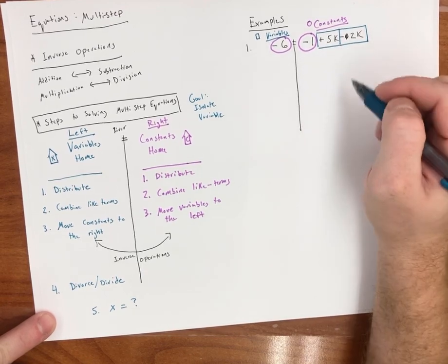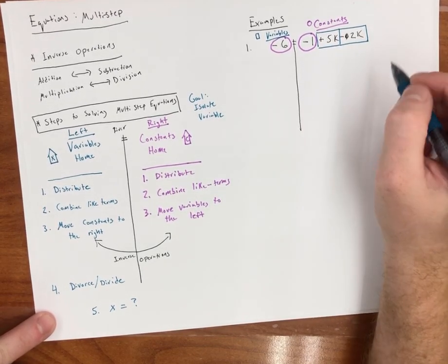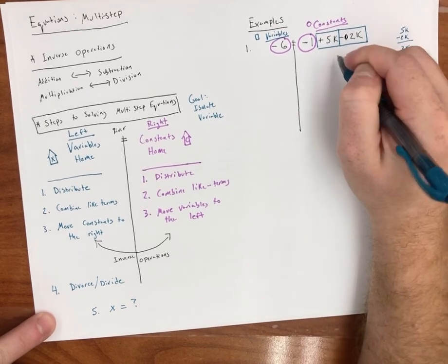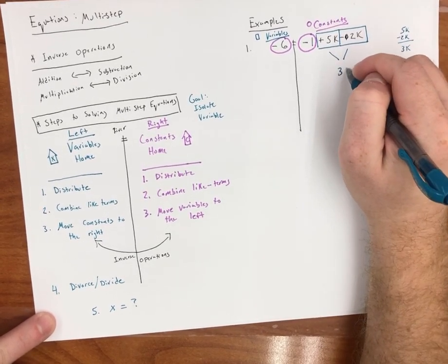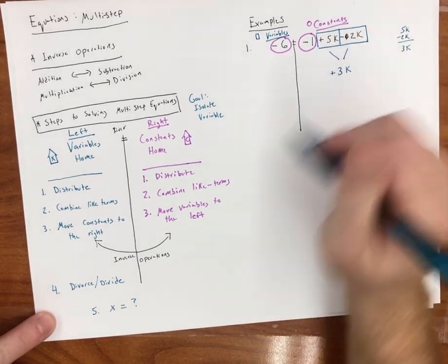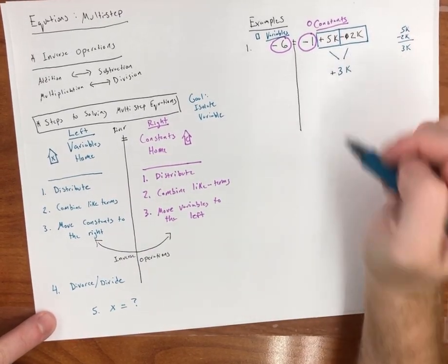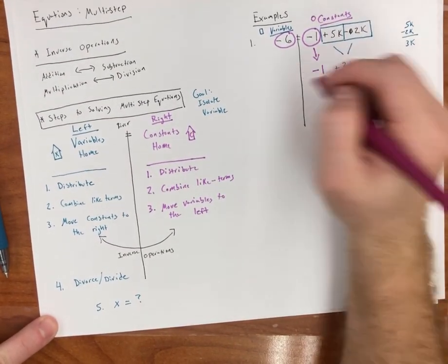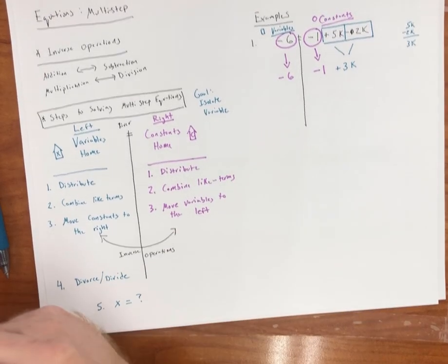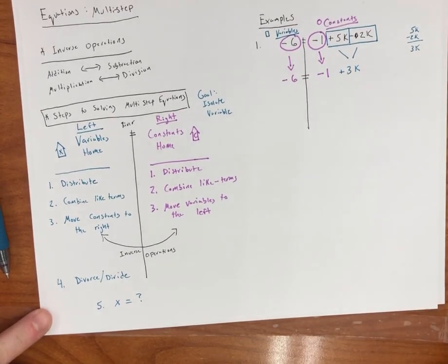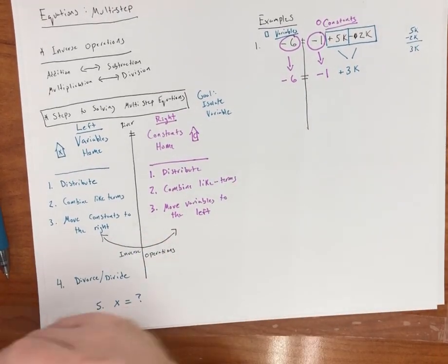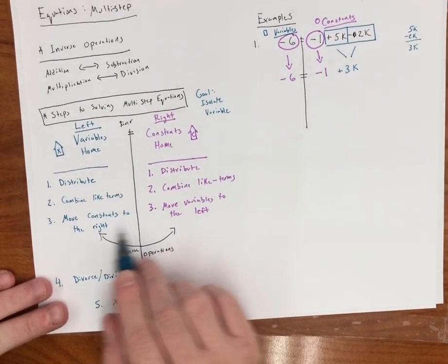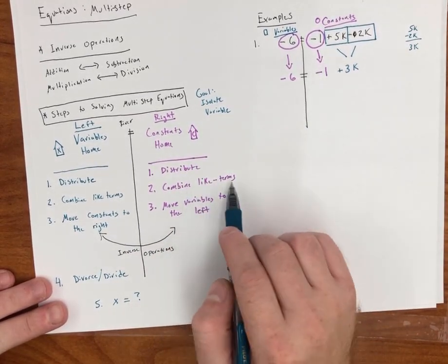So my constants is going to come down and my constant on the left is going to come down. Remember, these are equal still. Now, remember, I need to move my variables from the right to the left. Now we are at this part. We combine our like terms.